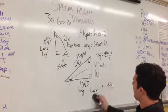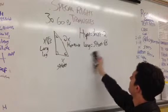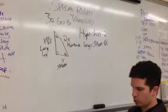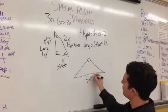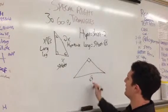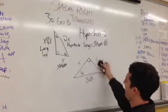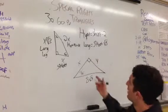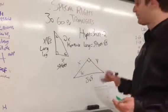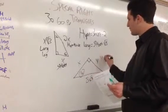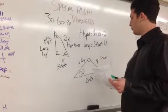I solved that triangle. Let's bust out a couple more. Let's say this side length is 8 square root 3. This is 30 degrees. What is x and what is y? I'm given my hypotenuse — my hypotenuse is 8 square root 3. This is my 30 degree angle, so y is going to be my short leg and x is going to be my long leg. The remaining angle would be 60.